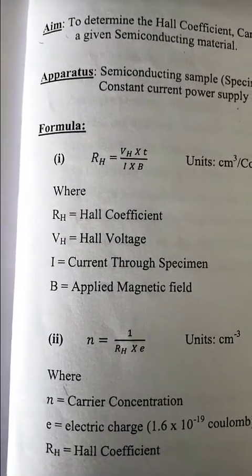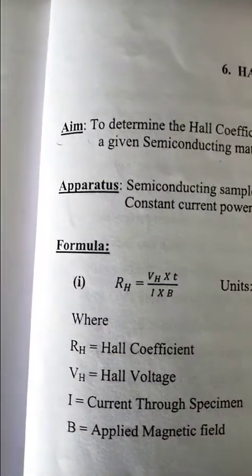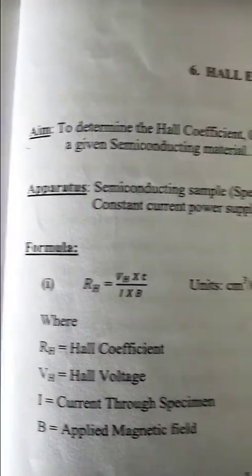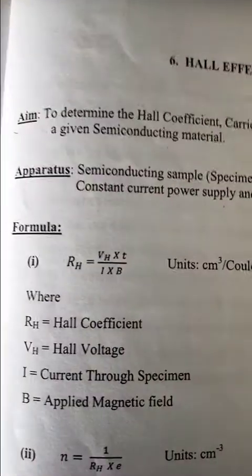The formulas are given here. First, for the apparatus to determine the Hall coefficient, we need a semiconducting sample. I'll show you the total apparatus in the laboratory. The semiconductor sample is placed here.